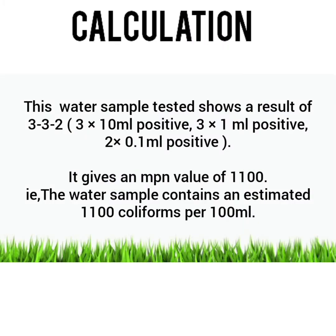Calculation: This water sample shows a result of 3-3-2. That is, 3 x 10 ml test tubes are positive, 3 x 1 ml tubes are positive, and 2 x 0.1 ml test tubes are positive. It gives an MPN value of 1100. That is, the water sample contains an estimated 1100 coliforms per 100 ml.